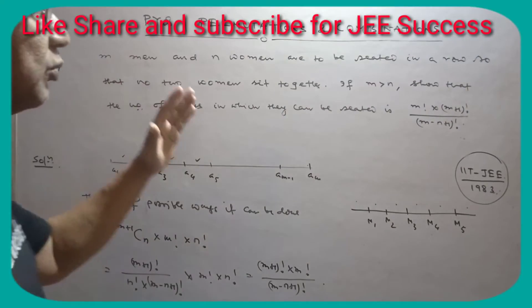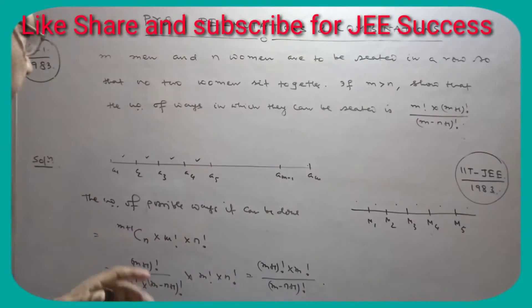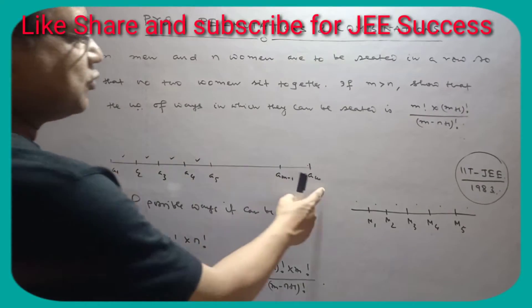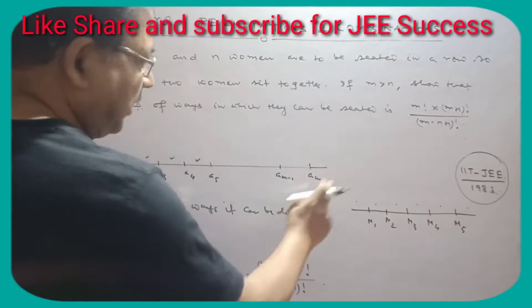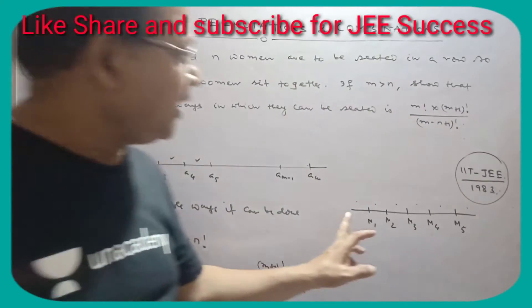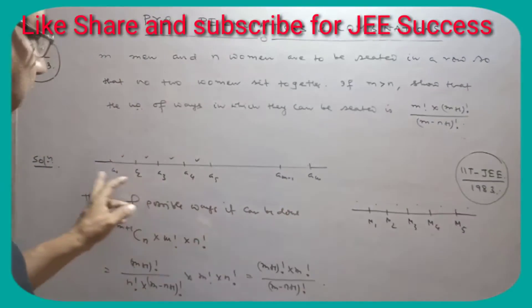This is a gap method question. Let me explain - consider M1, M2... men seated like this. I've considered men M1, M2, M3, M4, M5.